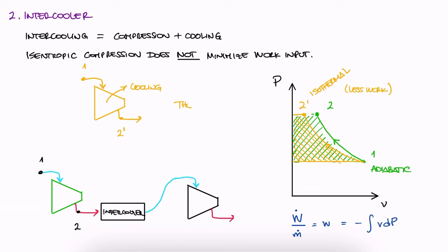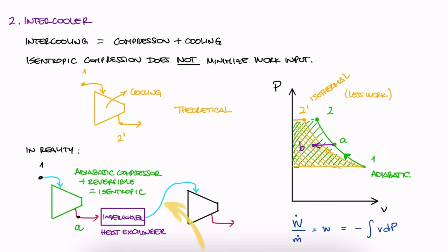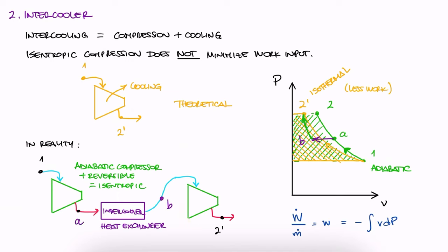...since how we're achieving this is by using a regular adiabatic and hopefully reversible and therefore isentropic compressor from 1 to A, then stopping and letting the heat exchanger that we call intercooler reject some heat between A to B, and then compressing a bit more from B to 2 prime, what we would see in the PV diagram is 1 to A on the same 1 to 2 line, then the intercooler lets heat out at a constant pressure, meaning a horizontal line as the temperature drops, and then another isentropic process between B and 2 prime.